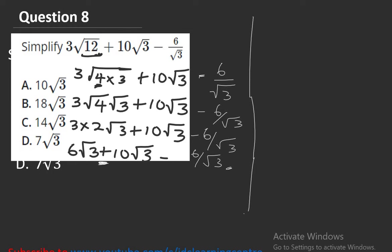This is actually 6 root 3 plus 10 root 3, which gives 16 root 3. So we now have 16 root 3 minus 6 over root 3. I treated the plus as times earlier — sorry for the error.